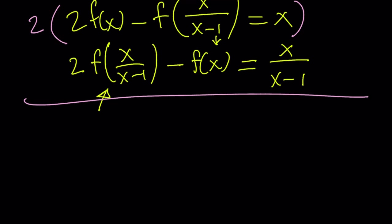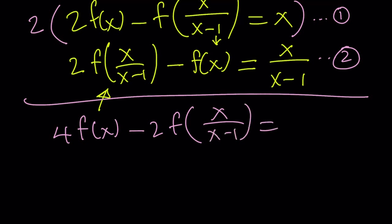You can number these equations and call them number 1 and number 2. I'm going to multiply equation number 1 by 2 on both sides. That's going to give me 4 times f of x minus 2 times f of x over x minus 1 equals 2x.